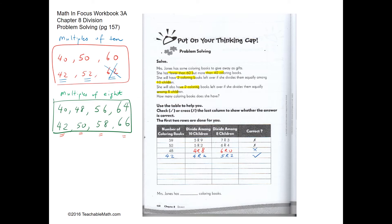Similarly, 66 — when you divide 66 by 8 — gives you a remainder of 2. However, 66 cannot be one of the answers because it is more than 60. So we compare the two lists and find that 42 appears in both lists. So 42 could be the answer.